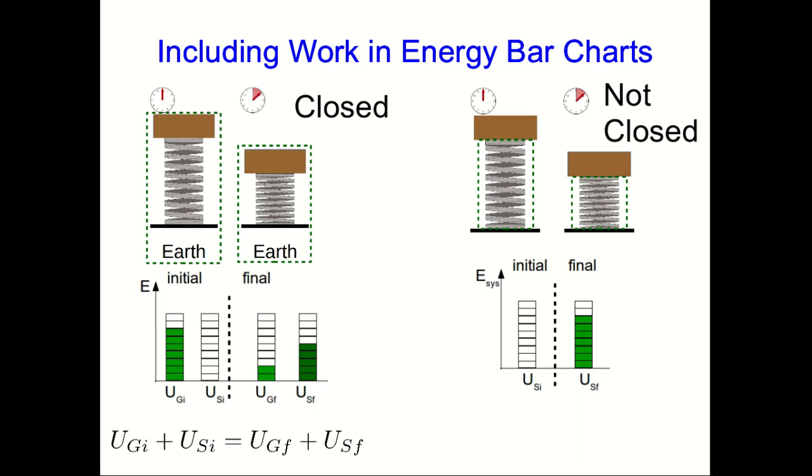But the whole point of an energy bar chart is that it represents an equation. So here's the equation that this one is representing. It's saying that the initial energies add up to the same quantity as the final energies. And in particular, the bar chart is showing us that one of those energies is zero, and so we can simplify it right away and we have an equation which is very useful if we want to solve for something.